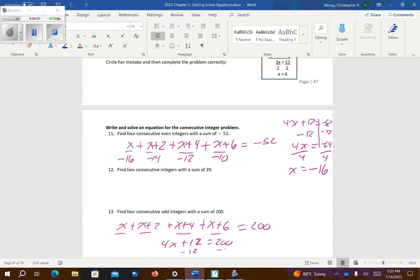Subtract 12 from both sides. So I'm going to get 4x is equal to 188. Divide each side by 4. So x is equal to 47. So the first number is 47. Add 2 to that, I get to 49. If I add 4 to 47, I get to 51. If I add 6 to 47, I get to 53.